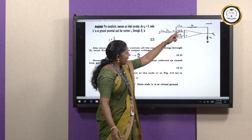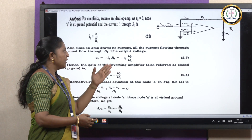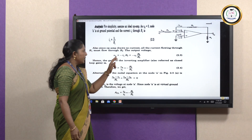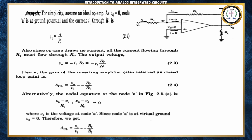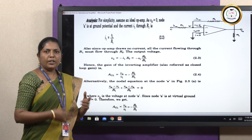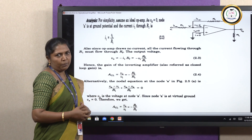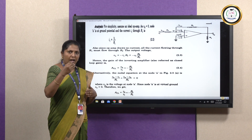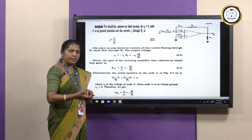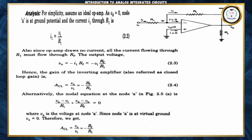Looking at the feedback loop, the output voltage equals IF × Rf. Since IF = −I1, Vout = −I1 × Rf. Since I1 = Vi / R1, we get Vout = −(Vi / R1) × Rf. The gain of an amplifier is output voltage divided by input voltage, so Vout / Vi = −Rf / R1. The gain of the inverting operational amplifier is −Rf / R1, meaning the output is amplified by a factor of Rf / R1 and the phase is inverted, shown by the minus sign. You can choose the desired amplification by selecting appropriate values of Rf and R1 — increase Rf and decrease R1 to achieve maximum gain.